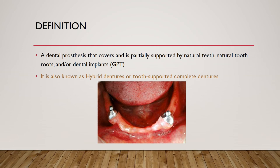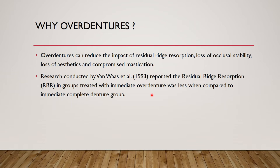Coming to the definition, according to the GPT — the Glossary of Prosthodontic Terms — an overdenture is a dental prosthesis that covers and is partially supported by natural teeth, tooth roots, or dental implants. It is also known as a hybrid denture or tooth-supported complete denture. You can see a coping with a stud attachment on top.